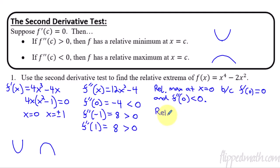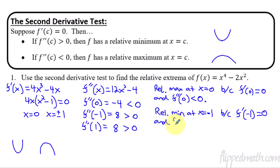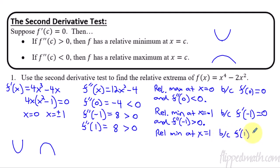For the other two answers: x equals negative one is concave up, so that's a relative min at x equals negative one, because f prime of negative one was zero and the second derivative at negative one is greater than zero, meaning concave up — that creates a minimum. The last one is exactly the same: relative min at x equals one, same justification — the first derivative at one is zero and the second derivative at one is greater than zero, creating a concave up situation, which gives us the minimum.